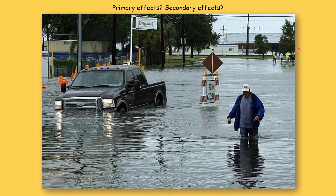Here we have a tropical storm which has produced huge amounts of torrential rain. The primary effect is the flooding that you can see and the road being closed. The secondary effects would be people not being able to go to work, people not being able to go to school, and the local economy losing lots of money.